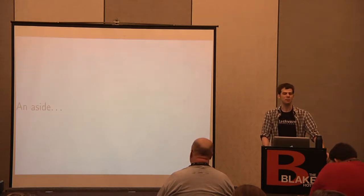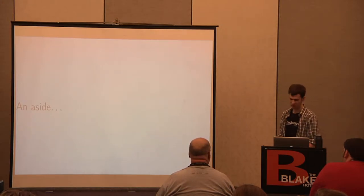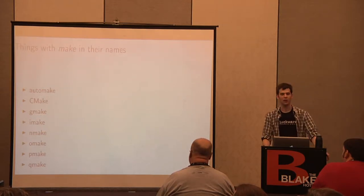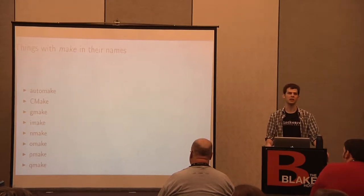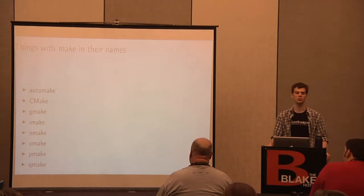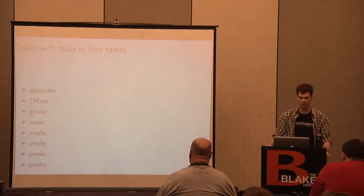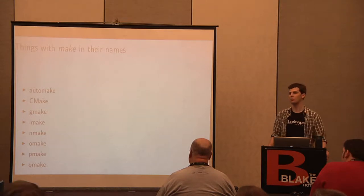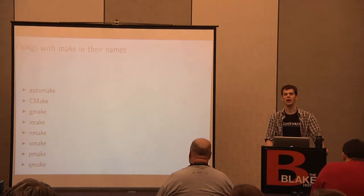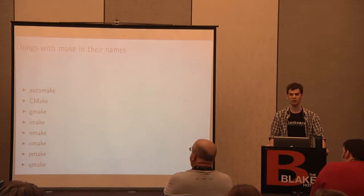There are quite a number of things named 'make.' Automake is the GNU makefile generator used in autotools. CMake is Kitware's cross-platform makefile generator — it also generates Xcode project files and Microsoft Visual Studio files. GMake is GNU make, which is what I'm going to be talking about here. IMake is a makefile generator that was used in old X projects; it has since been replaced by autotools.